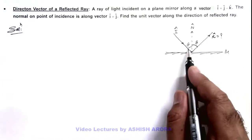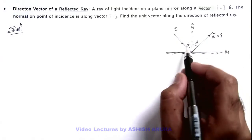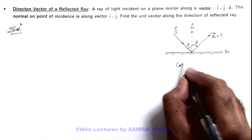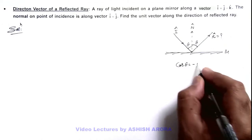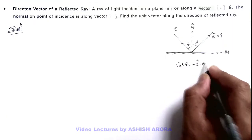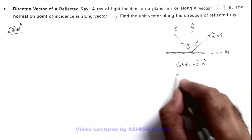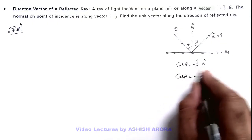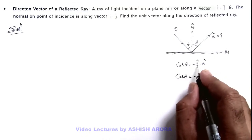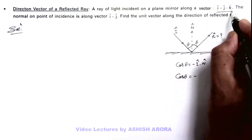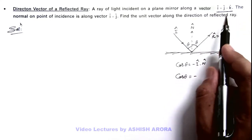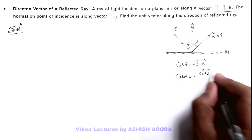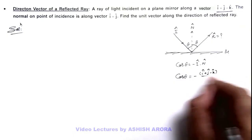In this situation, first we can calculate the value of θ. The angle between î and n̂ is 180° − θ, so here we can write cos θ = −î · n̂. By substituting the values, the unit vector î along the incident ray direction is (î + ĵ − k̂) / √3.